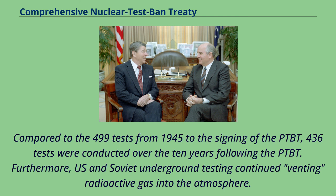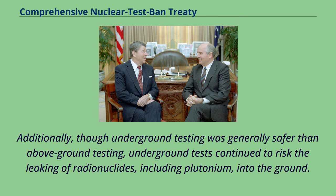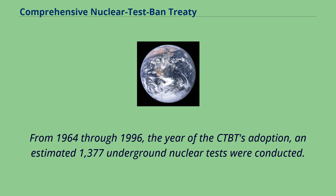Furthermore, U.S. and Soviet underground testing continued venting radioactive gas into the atmosphere. Additionally, though underground testing was generally safer than above-ground testing, underground tests continued to risk the leaking of radionuclides, including plutonium, into the ground. From 1964 through 1996, the year of the CTBT's adoption, an estimated 1,377 underground nuclear tests were conducted.